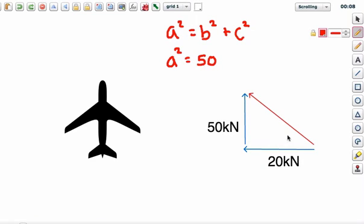I can leave it in kilonewtons, it just means the answer will be in kilonewtons. Normally what you do is you change to newtons, but for this type of question it doesn't matter too much. So we've got 50 squared plus 20 squared.